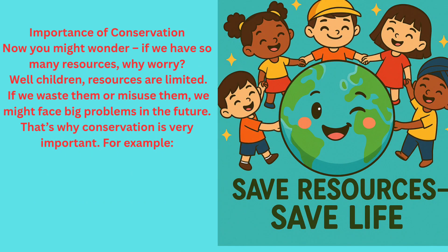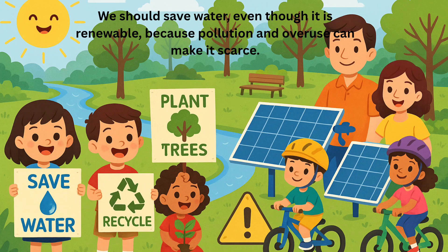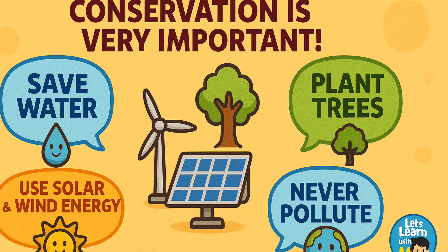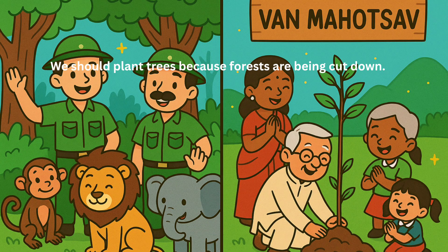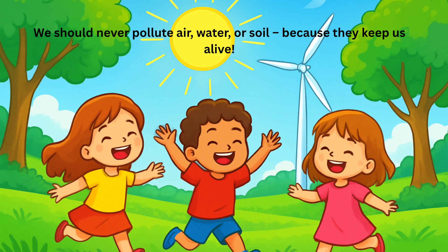Now you might wonder, if we have so many resources, why worry? Well children, resources are limited. If we waste them or misuse them, we might face big problems in the future. That's why conservation is very important. For example, we should save water, even though it is renewable, because pollution and overuse can make it scarce. We should plant trees because forests are being cut down. We should use solar energy and wind energy instead of only coal and petrol. We should never pollute air, water, or soil, because they keep us alive.